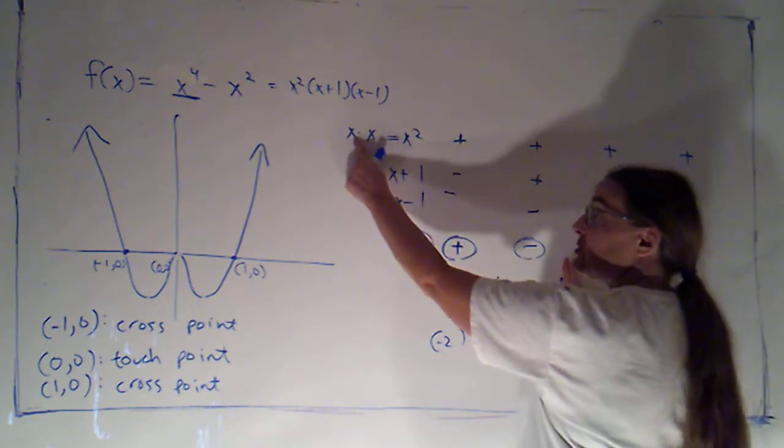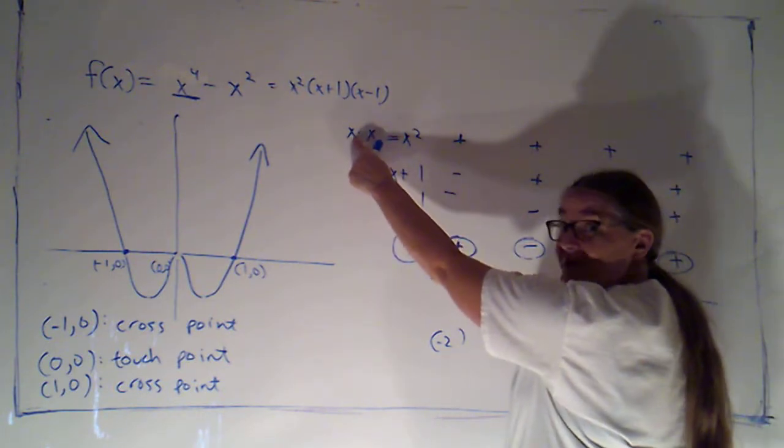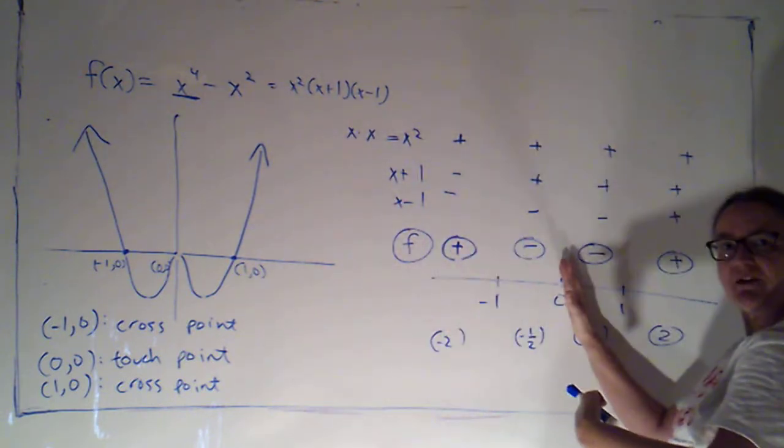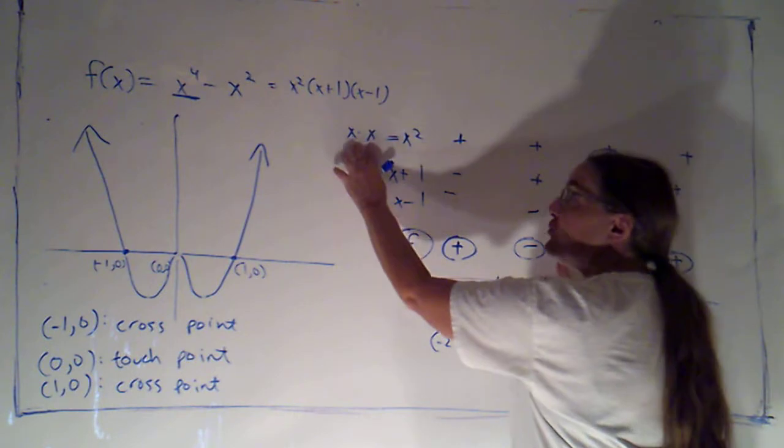Now, if I had just one factor of x, that would change sign at zero. That's negative to the left of zero and positive to the right of zero. But I had two factors of it.